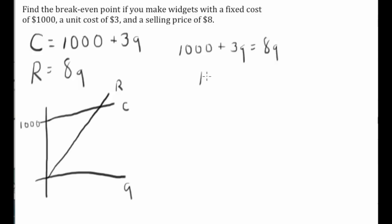And this is pretty easy to solve. So that point right there corresponds to a quantity of 200 units. And that's how you find a break-even point.